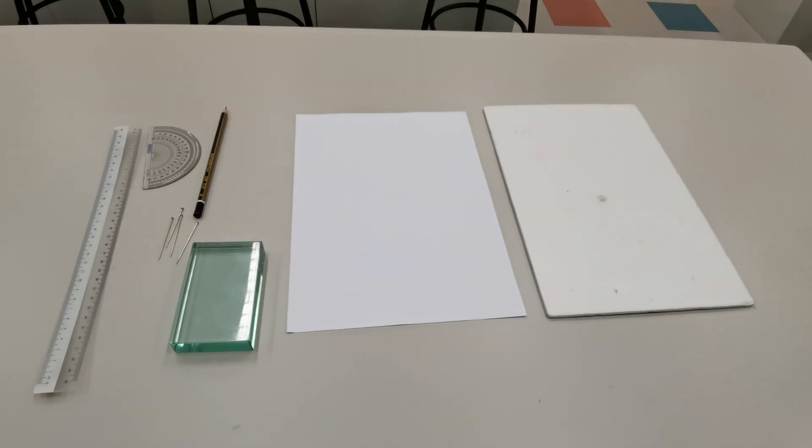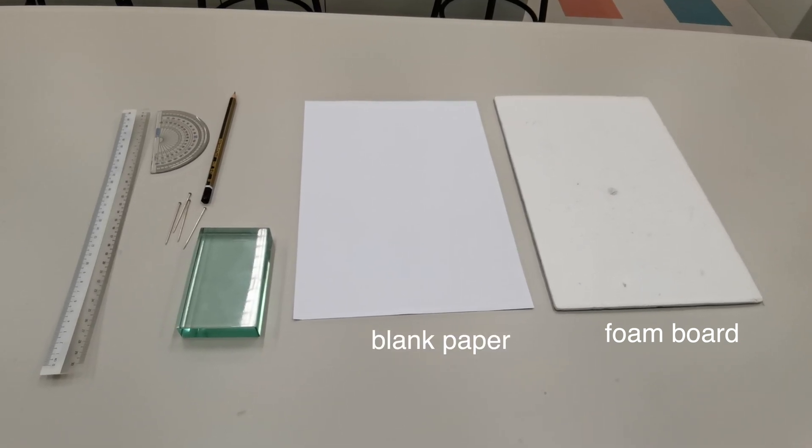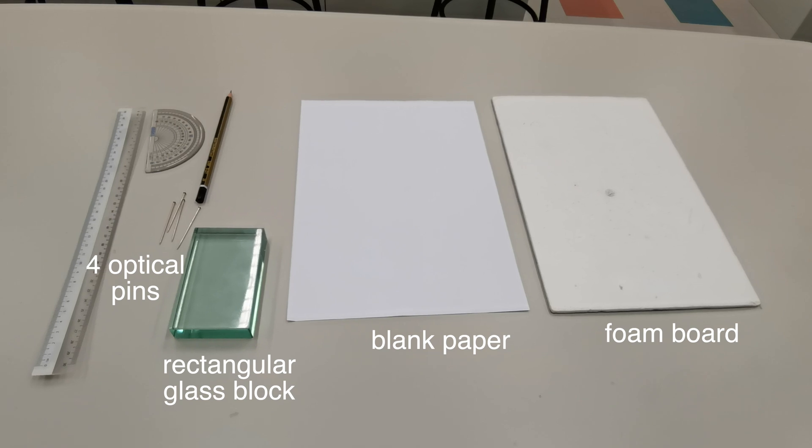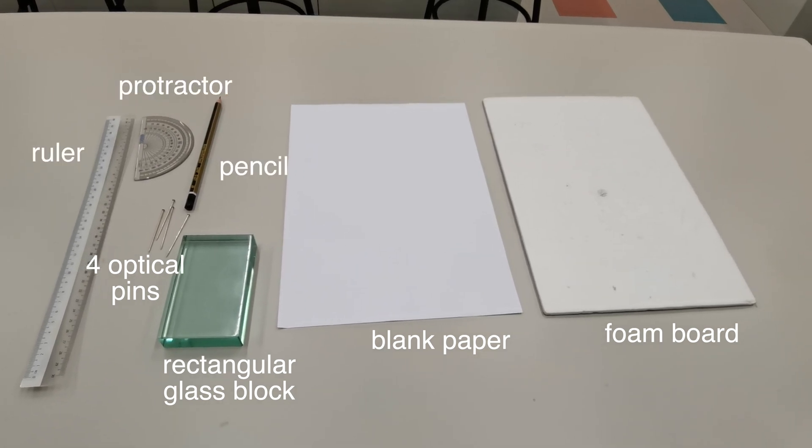For this experiment, you're going to need a foam board, a blank piece of paper, a rectangular glass block, four optical pins, a protractor and of course a pencil and a ruler.